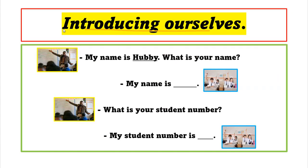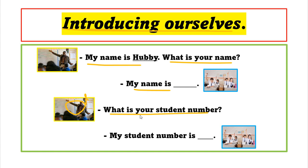Now we move to introducing ourselves. It's not good if I'm talking but you don't know me. My name is Habi — what is your name? Students reply with their names: my name is Chaiwat, my name is Ratanapon, my name is Katun, my name is Celiporn, my name is Tanapon, my name is Anand. Then the teacher asks: What is your student number? That means the number assigned to you in your classroom. You reply: My student number is 10, or 12, 13, 1, 2 — whatever your number is.